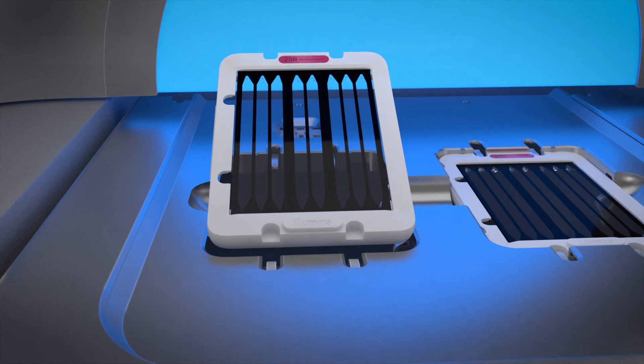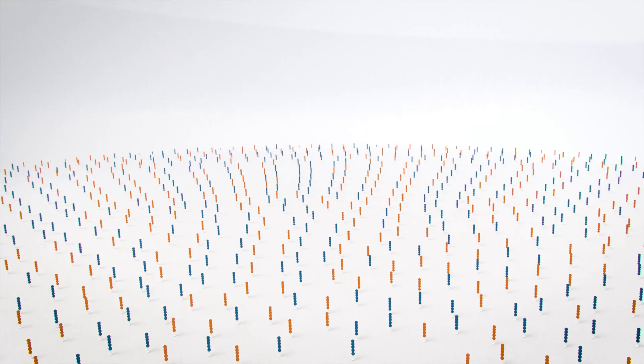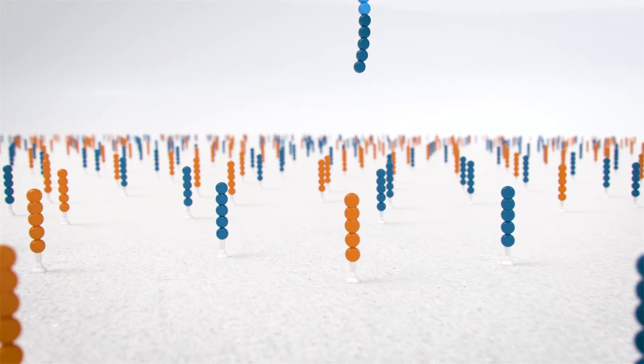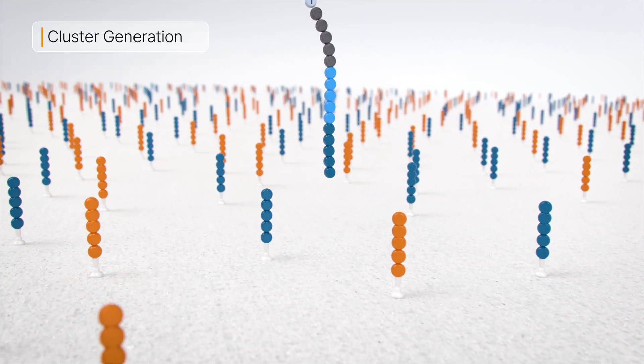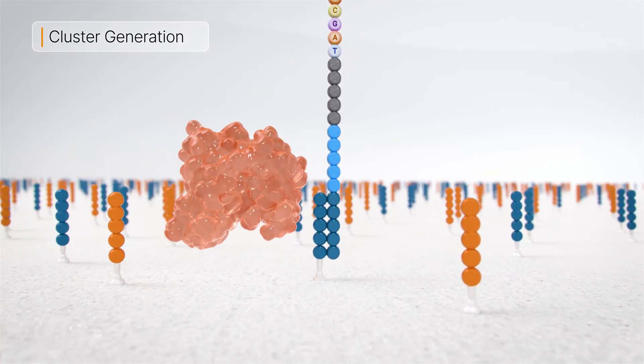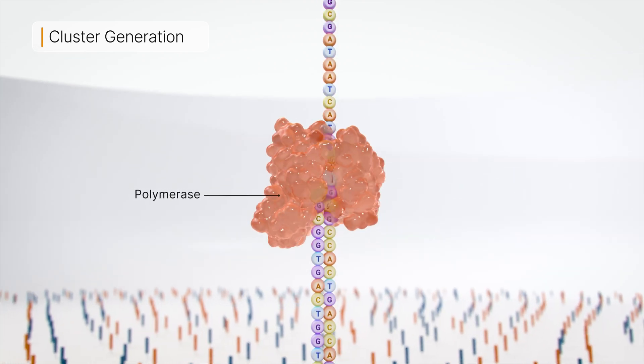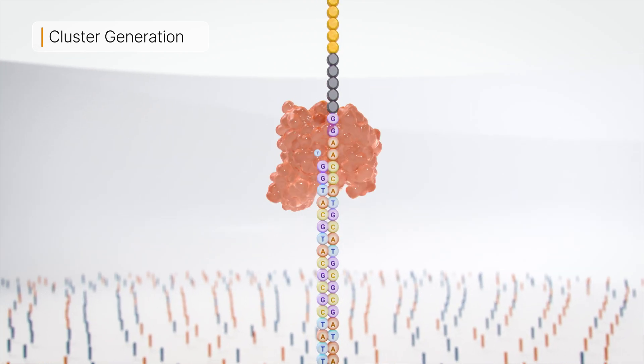Flow cells are coated with a lawn of two types of oligos. Cluster generation occurs when library fragments hybridize to the surface of the flow cell. DNA fragments are bound to the flow cell substrate through hybridization of complementary sequences.